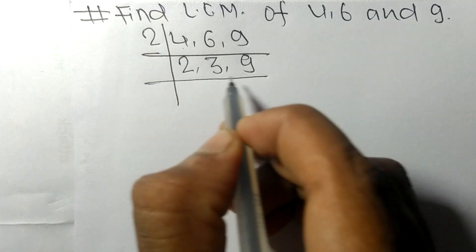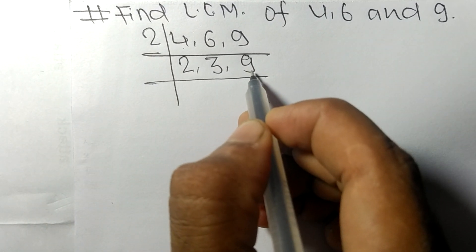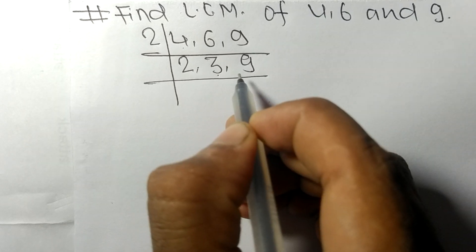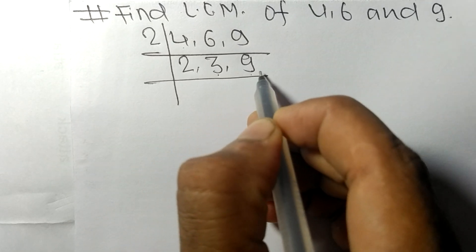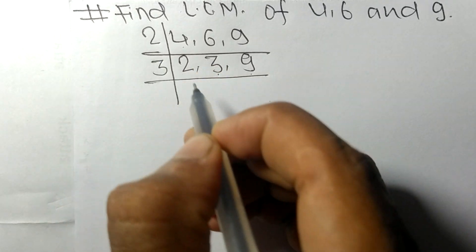So now we got 2, 3, and 9. Among them 3 and 9 is exactly divisible by 3, 2 not divisible so as it is.